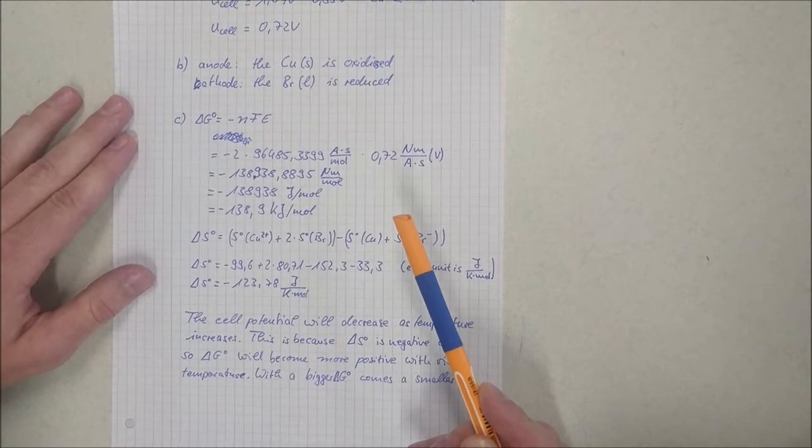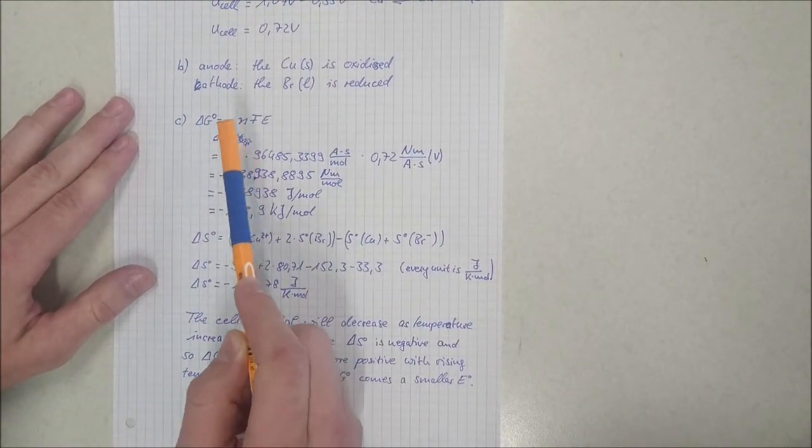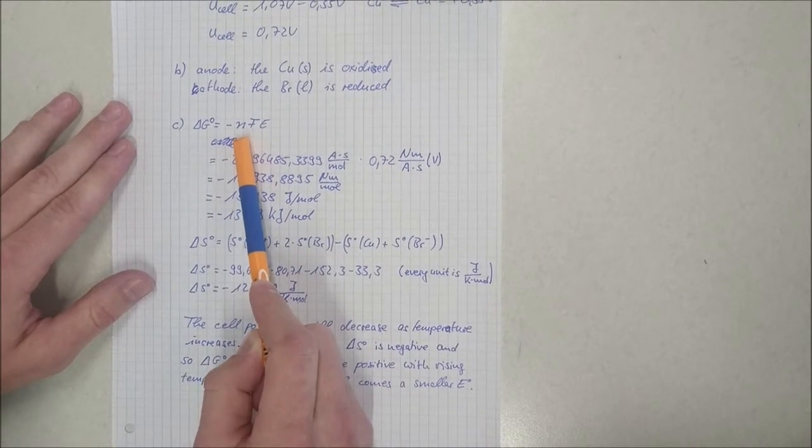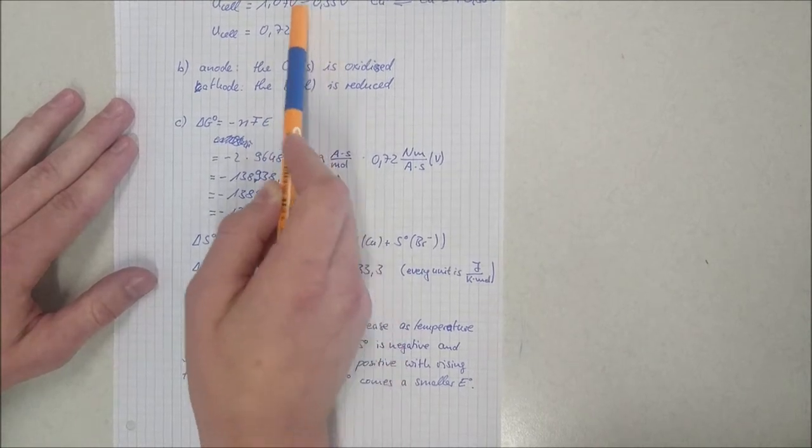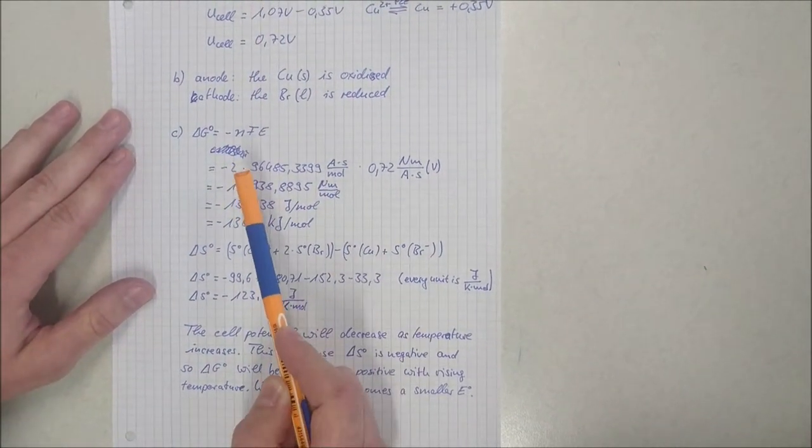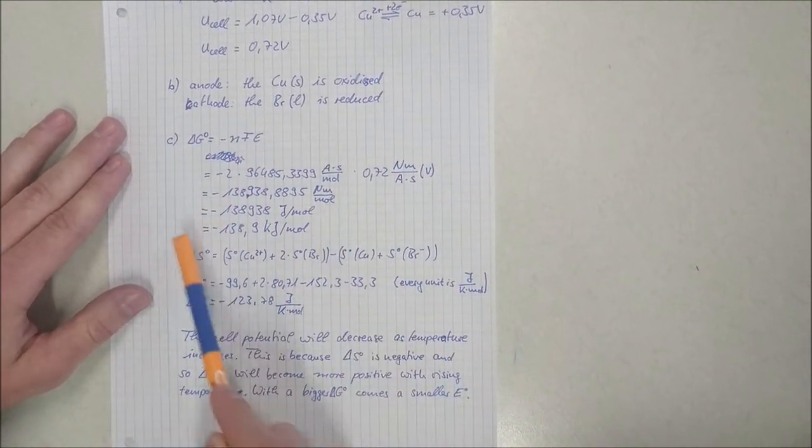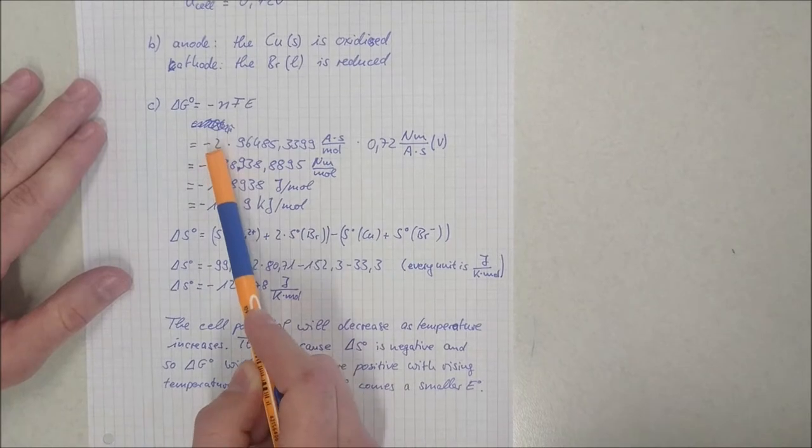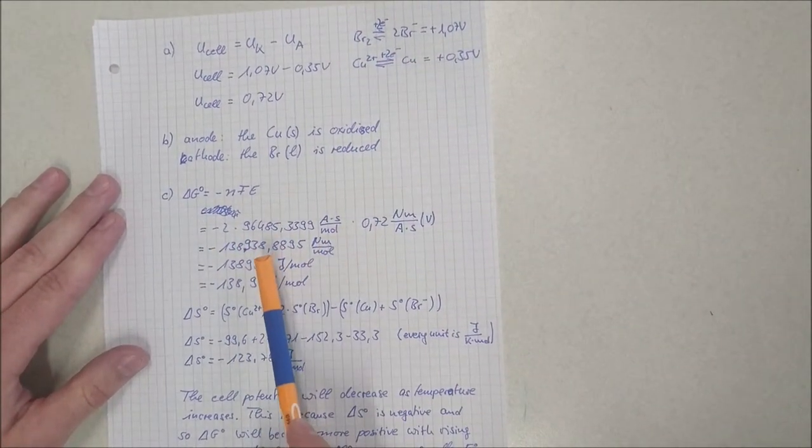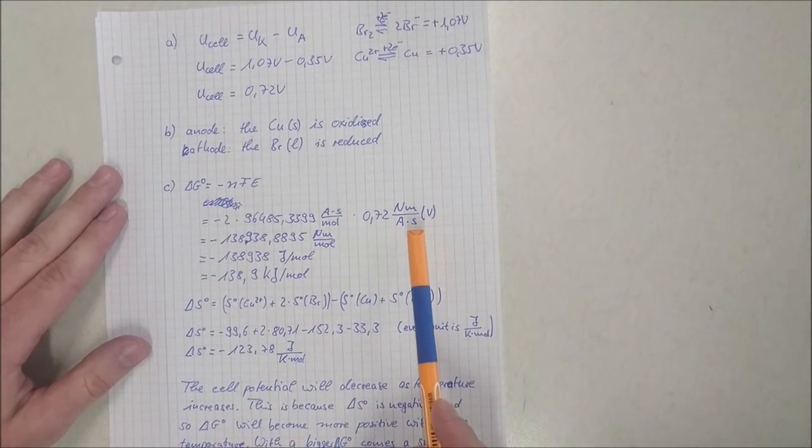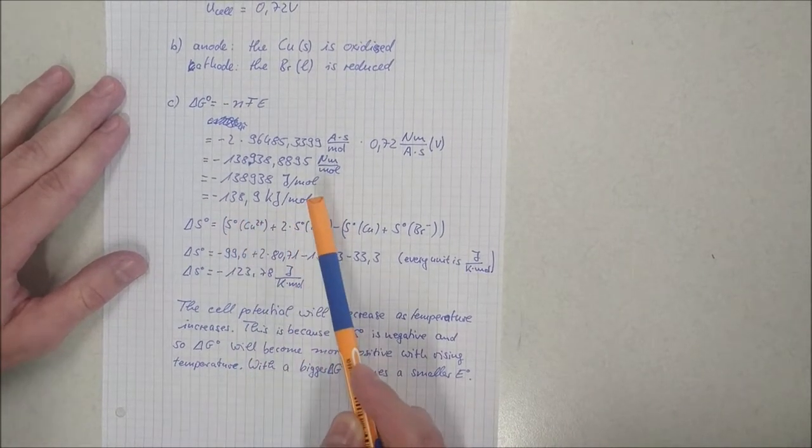For this, you need the Gibbs free energy: delta G equals negative nFE. You have two electrons for n, F is the Faraday constant, and E is the standard EMF of 0.72 volts. Putting the numbers together - two electrons, the Faraday constant, and the EMF - gives minus 138.9 kilojoules per mole.